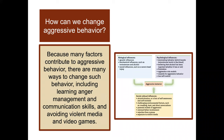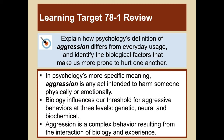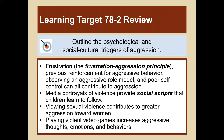How can we change aggressive behavior? Because many factors contribute to aggressive behavior, there are many ways to change it, including learning anger management and communication skills, and avoiding or minimizing violent media and video games. In review: aggression is an act intended to harm someone physically or emotionally. Biology influences our threshold for aggressive behaviors at the genetic, neural, and biochemical levels. Frustration, previous reinforcement, observing aggressive role models, and poor self-control all contribute to aggression. Media portrayals of violence provide social scripts that children learn to follow, and playing violent video games increases aggressive thoughts, emotions, and behaviors according to some research.